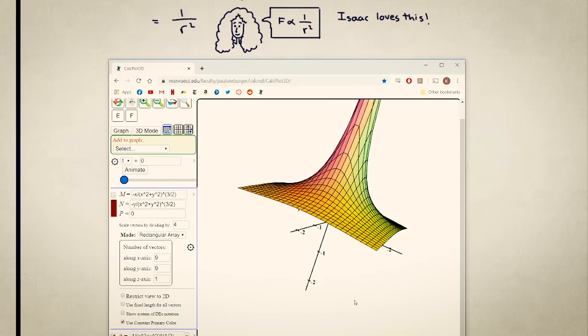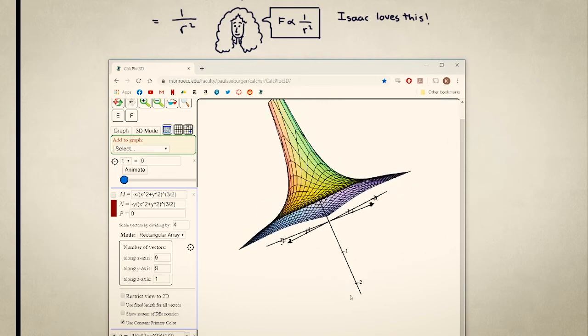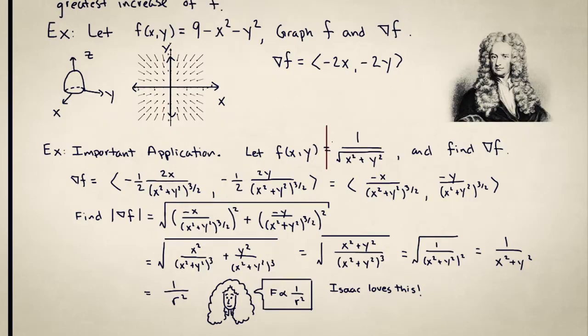Here's a graph of the scalar function, little f. I started with this scalar valued function, 1 over the square root of x squared plus y squared. So this is actually f equals 1 over r.